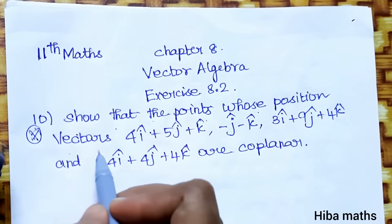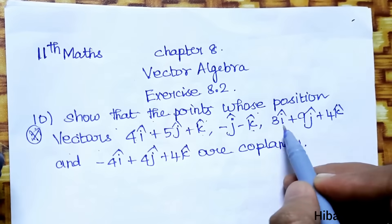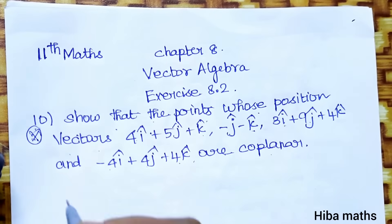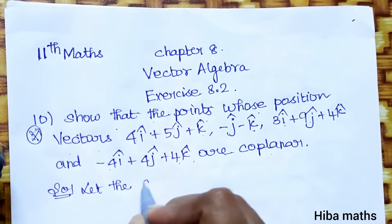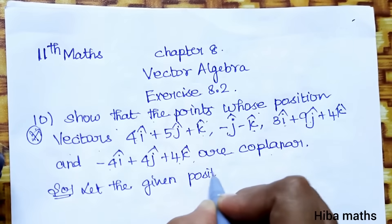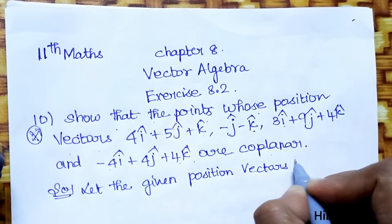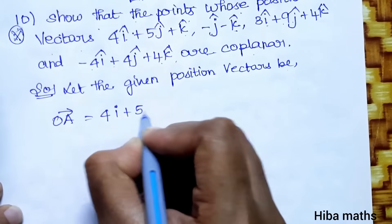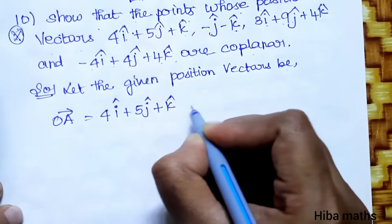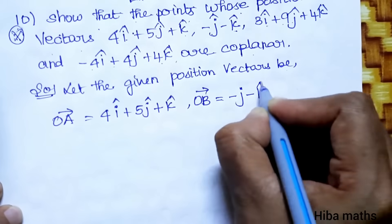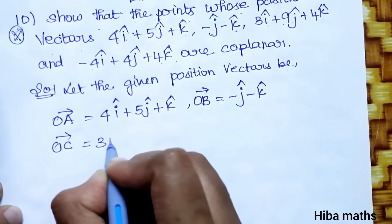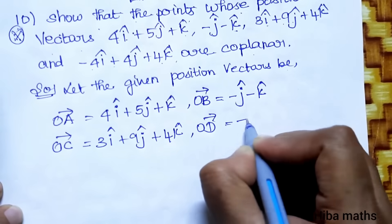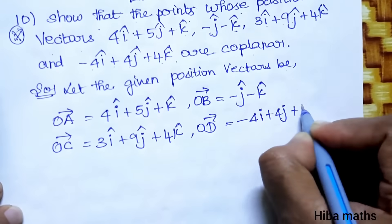Show that the points whose position vectors are 4i + 5j + k, -j - k, 3i + 9j + 4k, and -4i + 4j + 4k are coplanar. For this we need to prove coplanarity. Let the given position vectors be OA = 4i + 5j + k, OB = -j - k, OC = 3i + 9j + 4k, and OD = -4i + 4j + 4k.